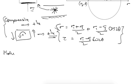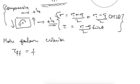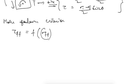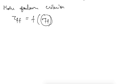Now let's see what Mohr said about failure. According to Mohr's failure criterion, the shear stress on the failure plane at failure is a function of the normal stress on that plane at failure. He said that shear stress is a direct function of normal stress.